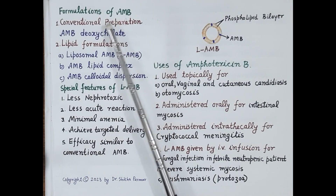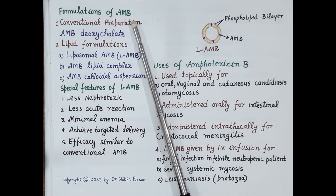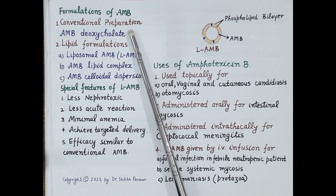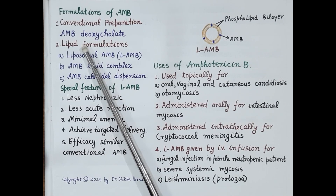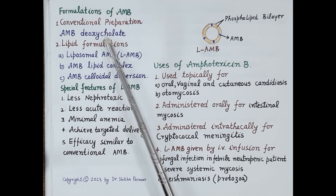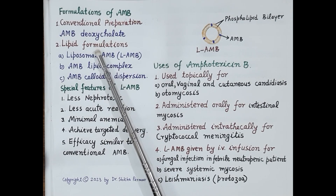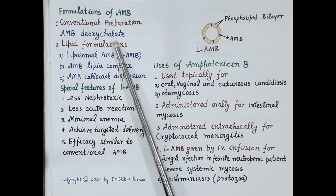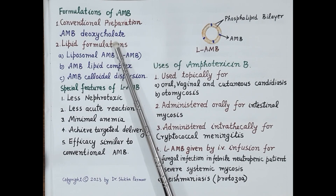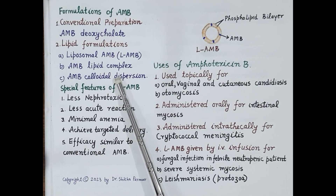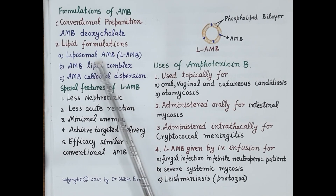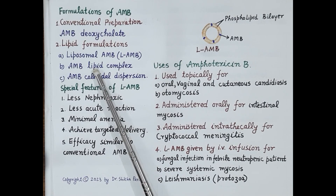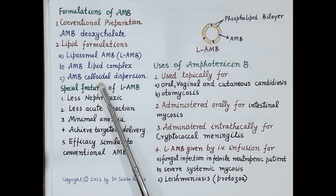Amphotericin B is available in two types of formulations: conventional and lipid formulations, all given by intravenous infusion. The conventional preparation is amphotericin B deoxycholate, a deoxycholate salt. Three lipid formulations are available: liposomal amphotericin B, amphotericin B lipid complex, and amphotericin B colloidal dispersion.